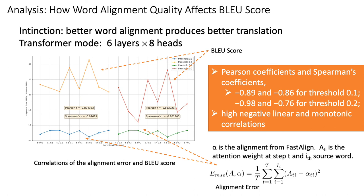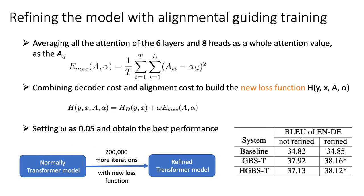In the next step, we refine the transformer model to verify our assumption. We first average all attention and define the alignment error as before, then define a new loss function where HD is the normal decoding cost of the transformer model and omega is the weight for the alignment error. We first train the transformer model normally, then retrain it with the new loss function. The new result shows that, comparing with the refined baseline, GBS obtains a 3.31 increment, and HGBS almost achieves the same performance as GBS. This shows that the refined model can improve our HGBS method.